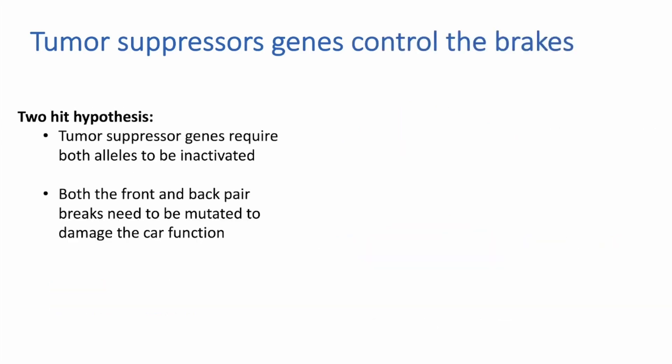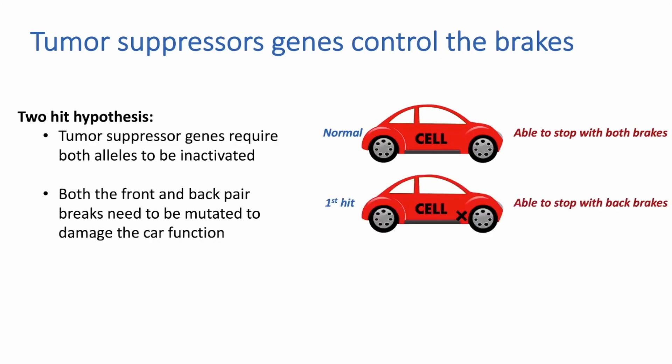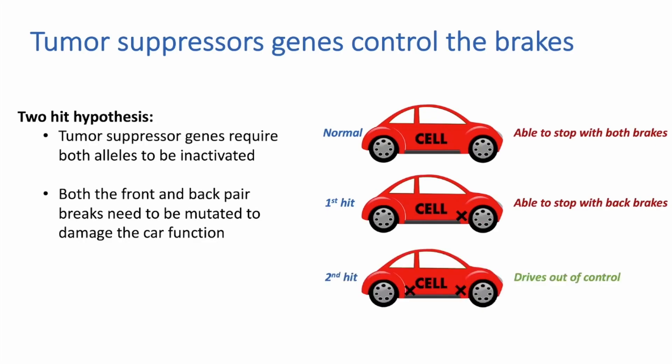Interestingly, you need two mutations in both alleles of the tumor suppressor gene to have any effect on the cell. This is called the two-hit hypothesis. For instance, you have a normal car with both pairs of brakes working, and you are able to stop the car whenever you need to. Then the first hit, or mutation, occurs. The front brakes are mutated, but you are still able to stop the car with the back brakes and can drive normally. However, if a second hit occurs and the back brakes are mutated, the car will drive out of control. Two mutations in both alleles of the tumor suppressor gene are needed for the cell to head down the path of a cancerous process. The brakes are just one example of the tumor suppressor two-hit hypothesis, but there are other safety features, or tumor suppressor genes, that can be mutated and lead the cell towards a cancerous transformation.